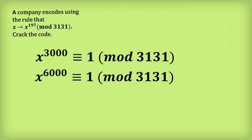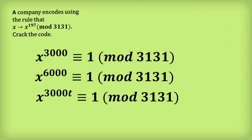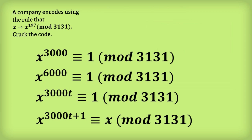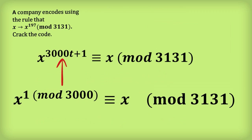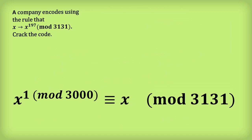We can square numbers in modular arithmetic. So if we square both sides, we get x to the 6000 is equivalent to 1 mod 3131. In fact, we can raise x to the power of any multiple of 3000 and we'll still get 1 mod 3131. Now let's multiply both sides by x. On the left-hand side we get x to the power of 3000t plus 1, and that is equivalent to x. That's really just any number equivalent to 1 mod 3000. So x to the power of 1 mod 3000 is equivalent to x, giving us insight into coding and decoding.